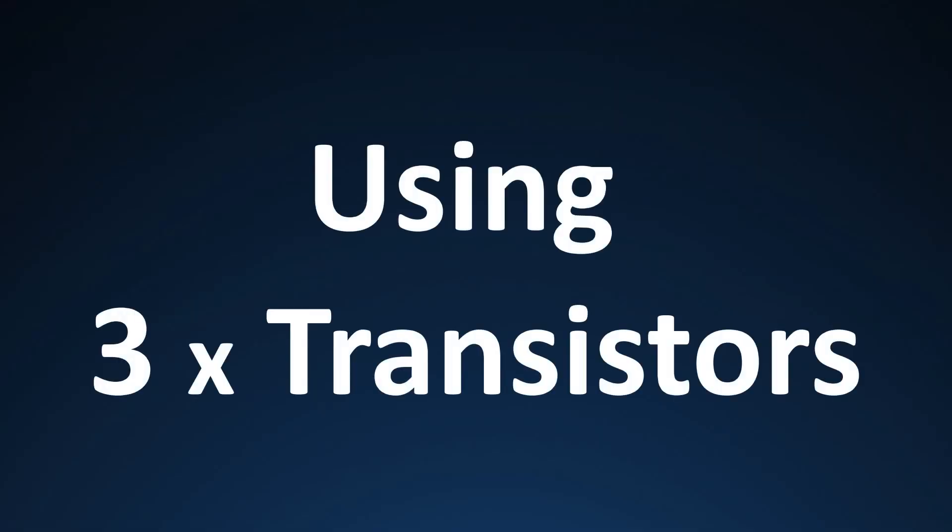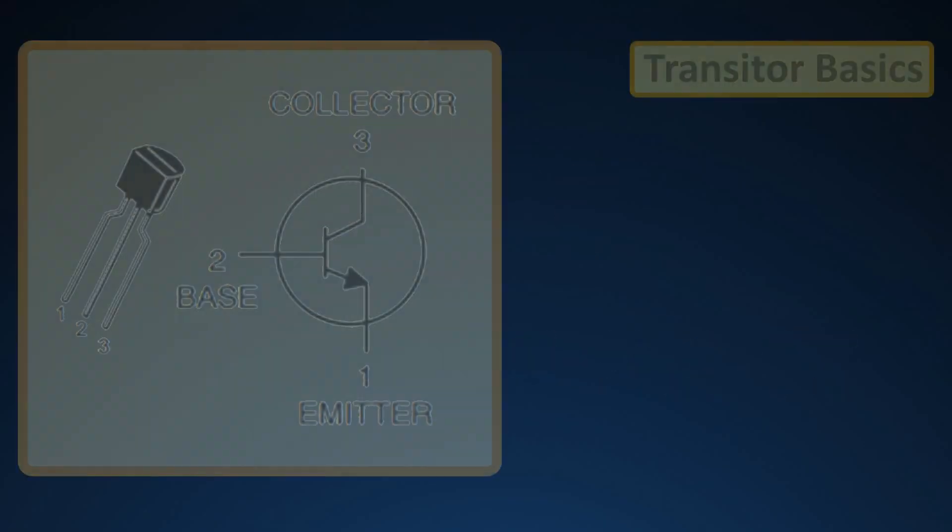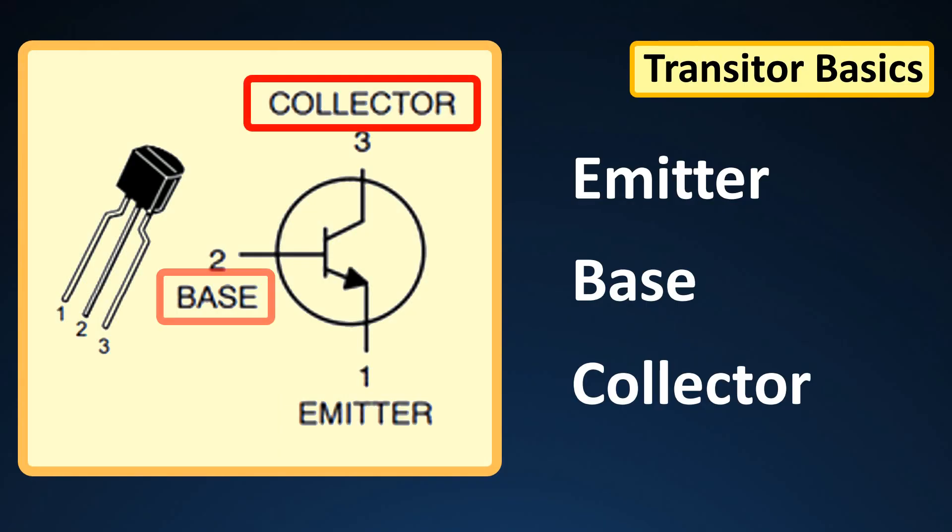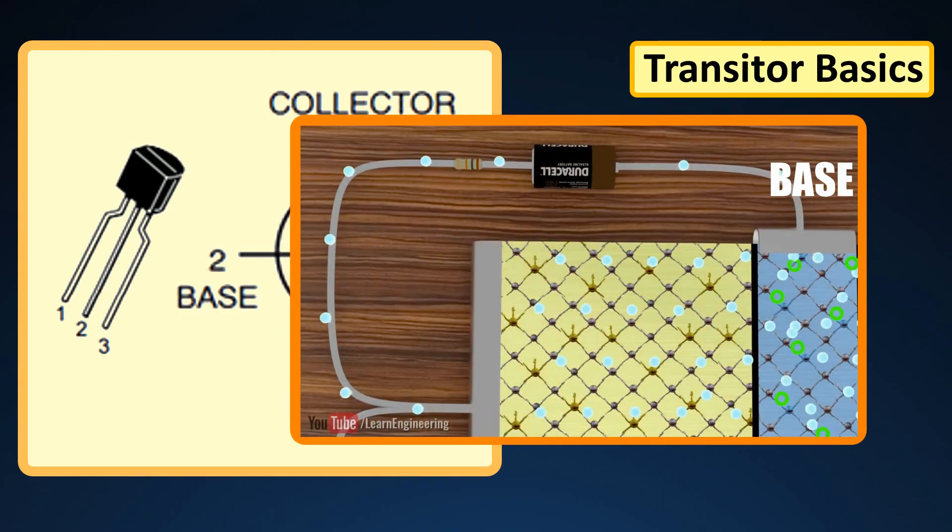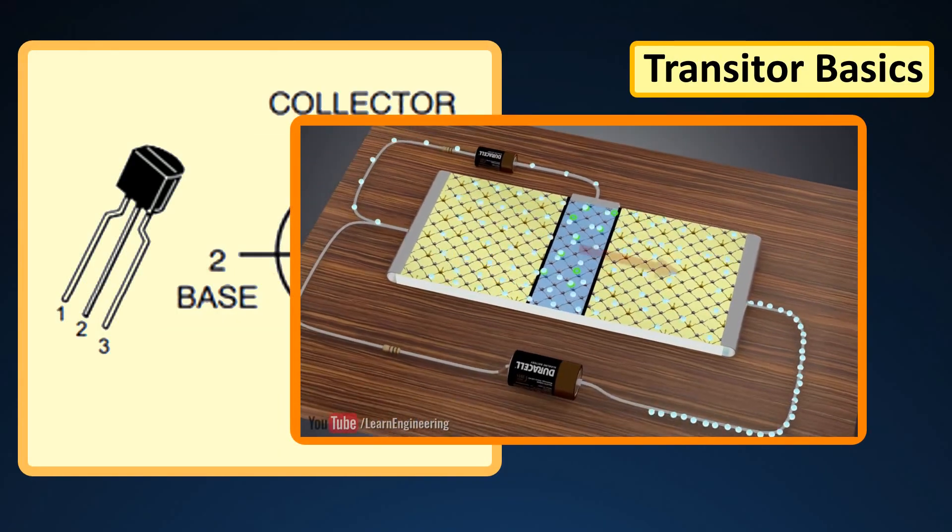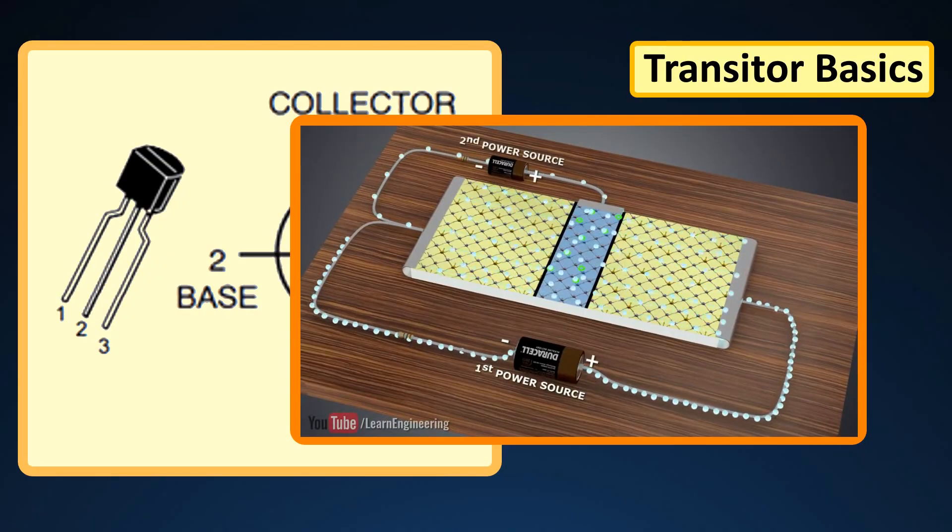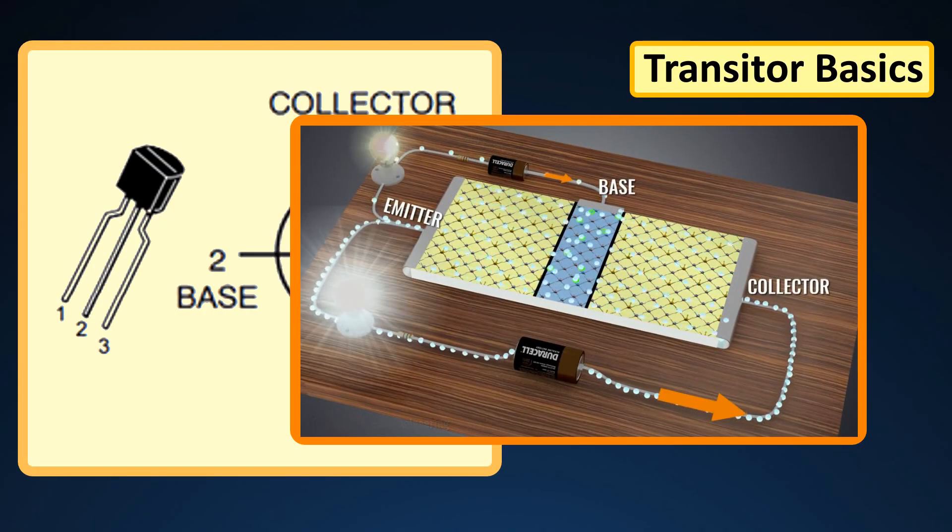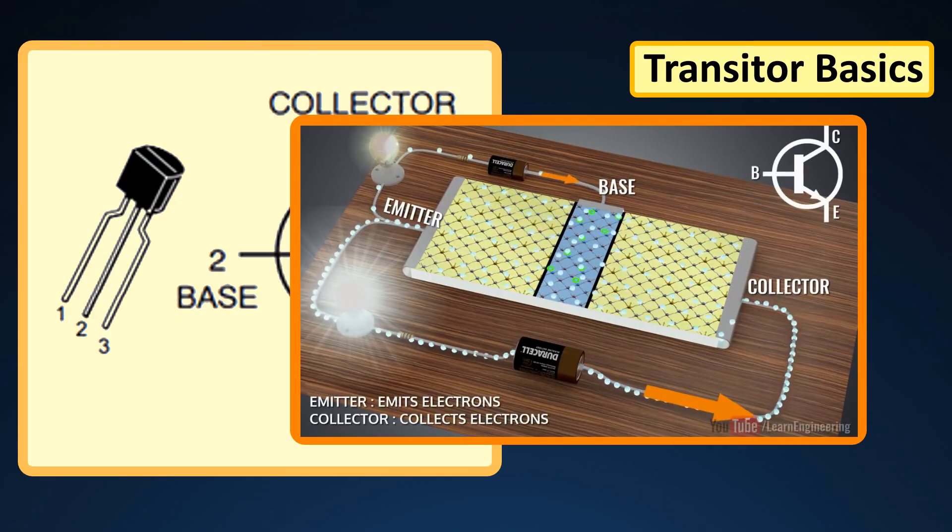In the final setup, I am using three general purpose NPN transistors. As we know, a transistor has three terminals: emitter, base and collector. Collector to emitter current is controlled by the base current. When there is no base current, no current flows through the collector to emitter. Thus, a transistor acts like a switch. So a transistor can either be on, off or in between.